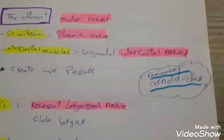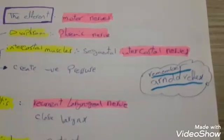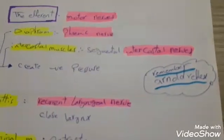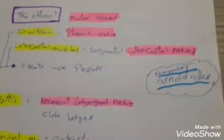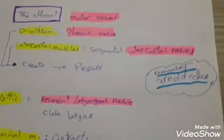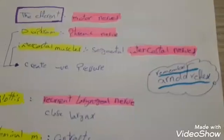We should notice that the Arnold reflex is the cough occurring when manipulating the external auditory canal. It is mediated by the auricular branch of the vagus nerve, called the Arnold nerve.